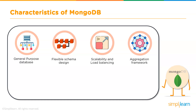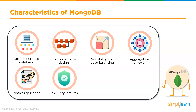MongoDB also offers an aggregation framework — an extract, transform, and load framework that eliminates the need for complex data pipelines. Native replication means data gets replicated across a replica set without complicated setup. Security features: both authentication and authorization are taken into account. JSON is widely used across the web for front-end and API communication, and MongoDB is compatible with that same protocol.